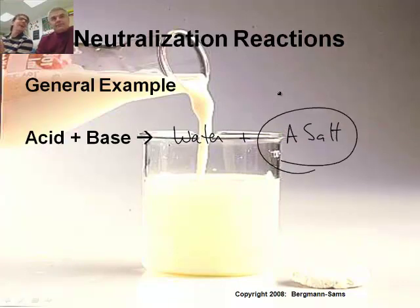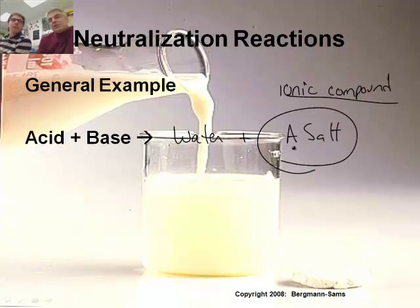Basically, you're going to get the cation from the base combined with the anion from the acid. Yeah. And that's what you get left. The definition of the word salt, by the way, is an ionic compound. It is. For all intents and purposes.